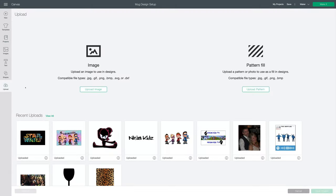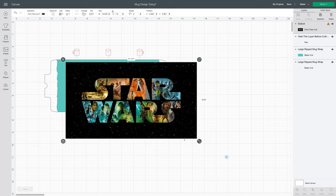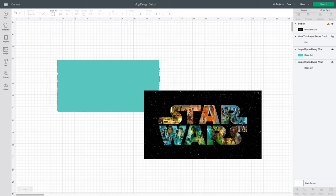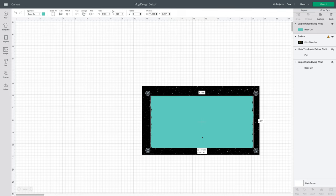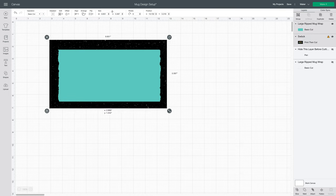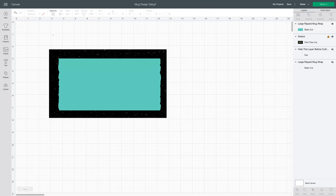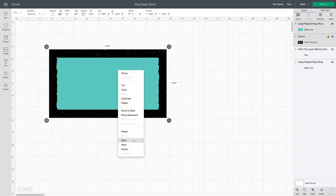I'm going to my upload screen because I have a background that I want to use with this template. Here it is. It's very large, so we'll shrink it down some. I go to my layers panel and I click hide this layer. I turn off large ripped mug wrap. I'm left with just this shape again. I'm going to send to the front and place it over this background that I want to use. That looks good. I'm going to select all, align and center, right click and slice.